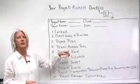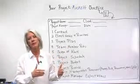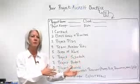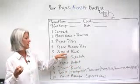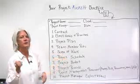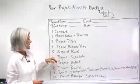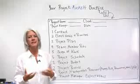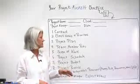Number five is the scope of the work — identifying what's in scope and more importantly what's out of scope. You want to identify the scope, and if you're doing a phased approach, what will be done in different phases. Number six is the project schedule, the timeline, and the milestones for your project.